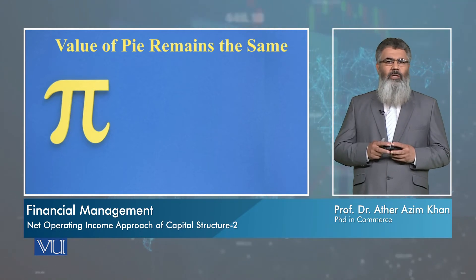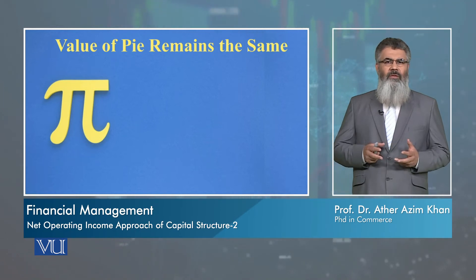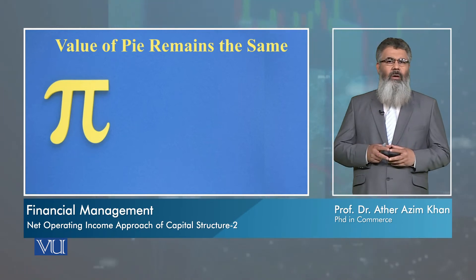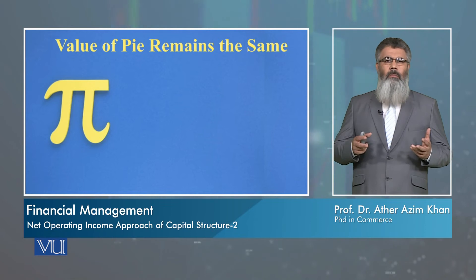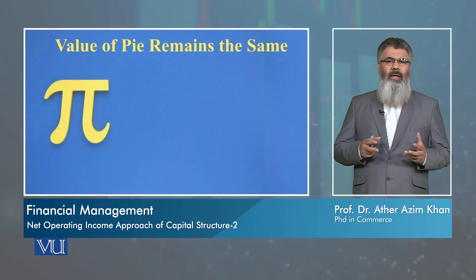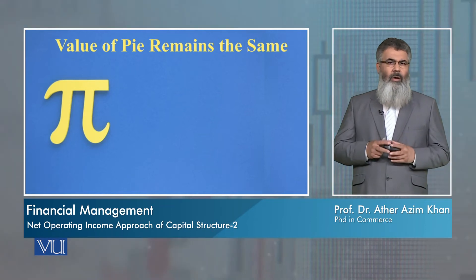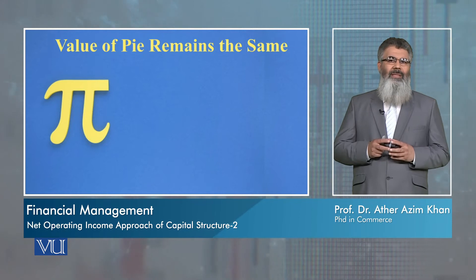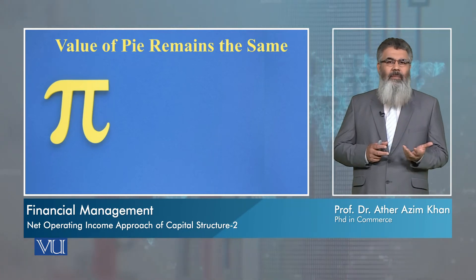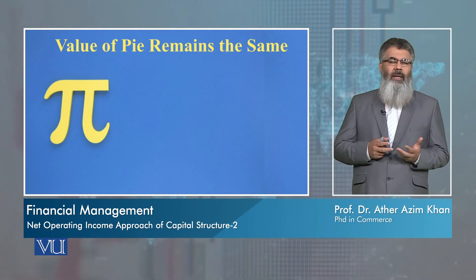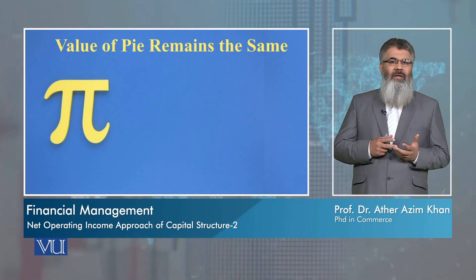Whether you make two pieces of a pie, or four pieces, or eight pieces, or more or less than that — when you sum up, when you add all those pieces, the total value will be the same. That is the total value of the pie, which is 360 degrees.